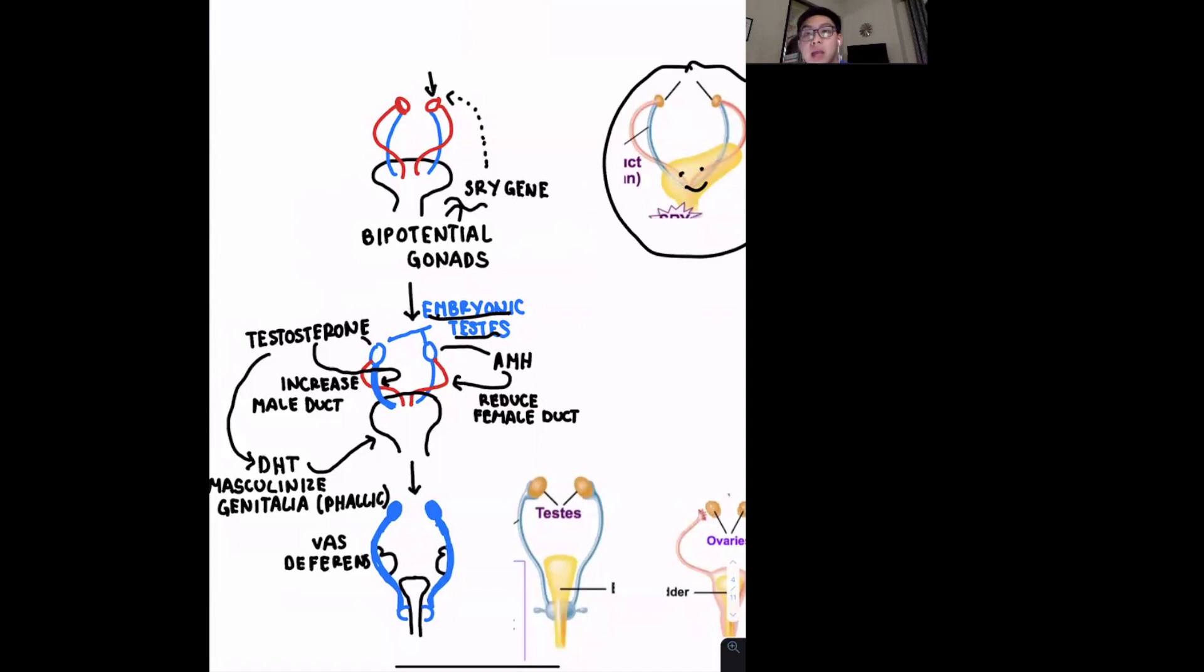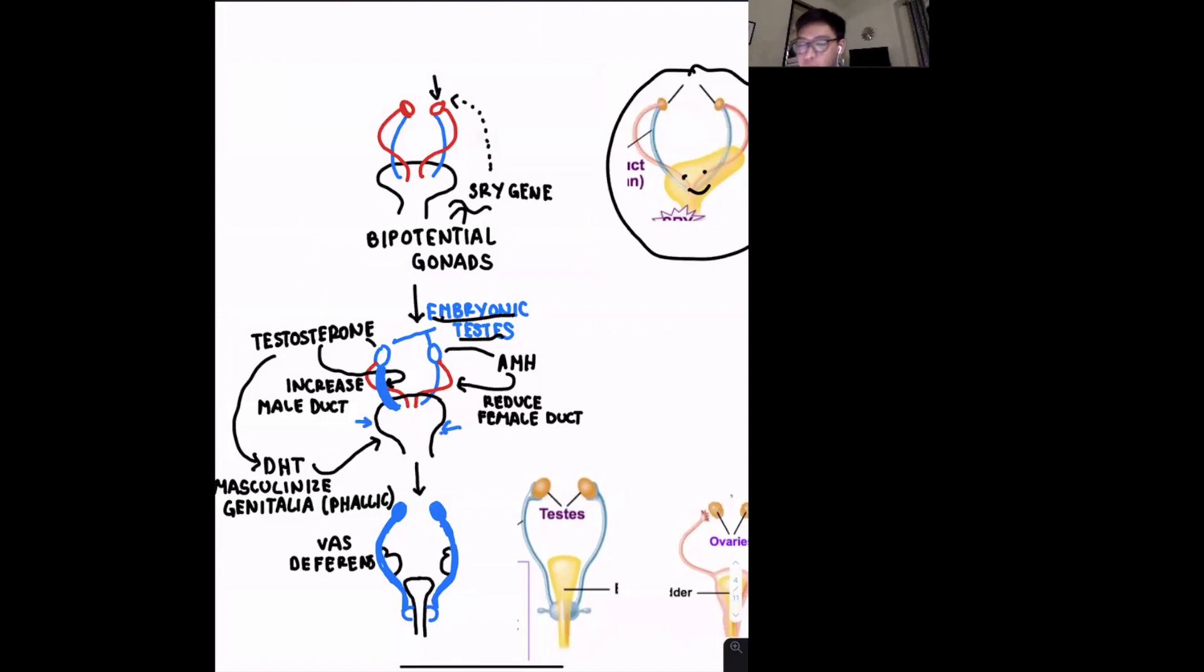So there is testosterone and there is AMH or anti-mullerian hormone. One of the functions of testosterone is to increase the male duct. So in this case, we are taking the male tubes and we are increasing them, we're developing them even more. And then also testosterone is going to turn into DHT and DHT is a hormone which will masculinize the genitalia. And then the other hormone, anti-mullerian hormone, will reduce the female duct.